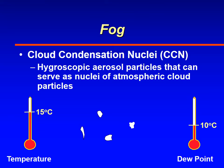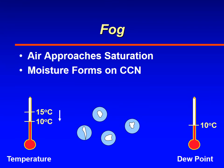Fog forms on cloud condensation nuclei, CCN, which are hygroscopic aerosols in the atmosphere. Hygroscopic means that they attract water vapor molecules. When the temperature approaches the dew point, the air has a higher relative humidity and starts to approach saturation.